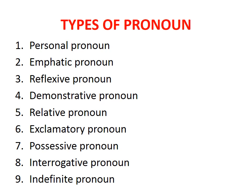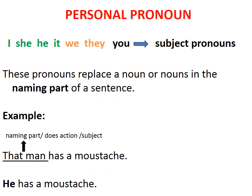We are going to study personal pronoun. Personal pronoun is again divided into two parts. The first type includes: I, she, he, it, we, they, you. All these come under subject pronouns. These pronouns replace a noun or nouns in the naming part of the sentence. Naming part means the subject part, or the noun that does an action. See the example: 'That man has a moustache.' Here, 'that man' is the naming part, or the subject.